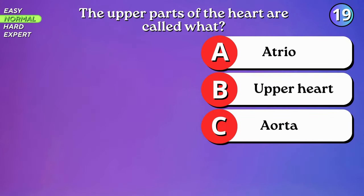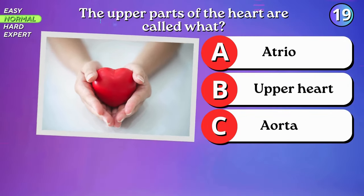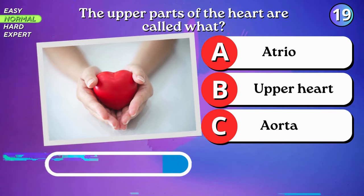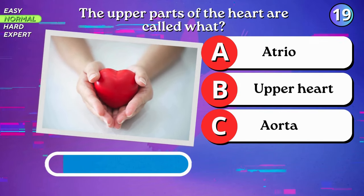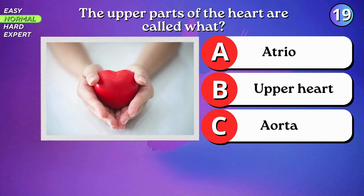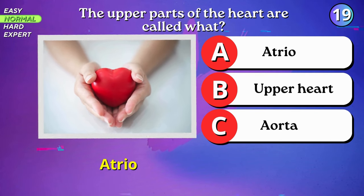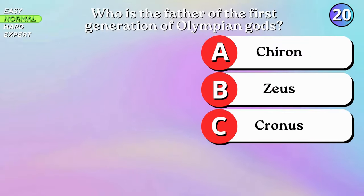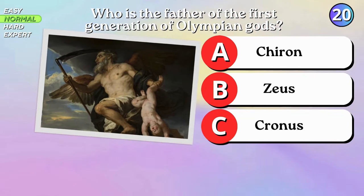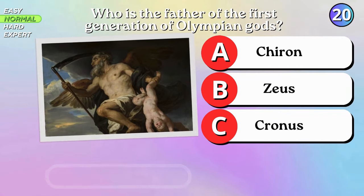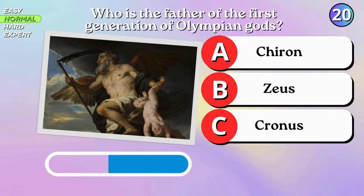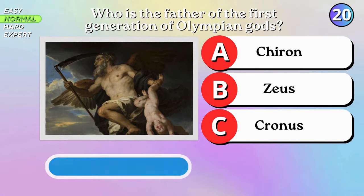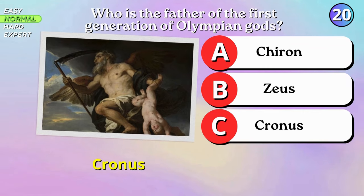The upper parts of the heart are called what? Atria. Who was the father of the first generation of Olympian gods? Cronus.